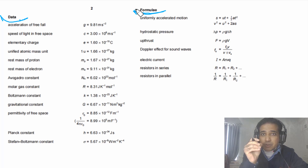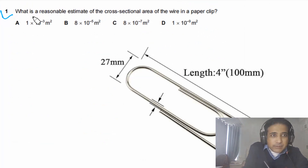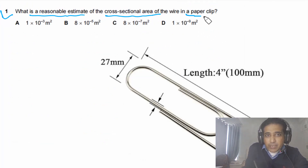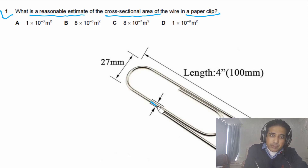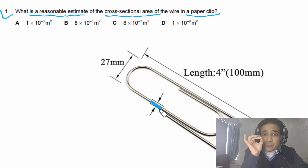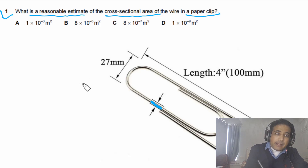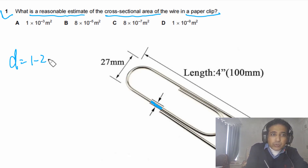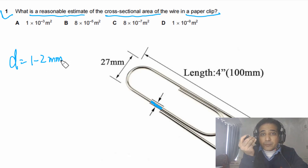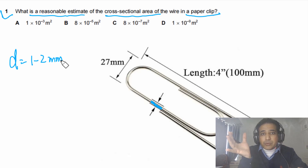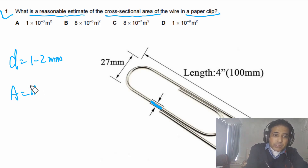Question one asks: what is a reasonable estimate of the cross-sectional area of the wire in a paper clip? First, look at the paper clip and estimate its diameter — the thickness of the wire. If you have a sense of scale, having looked at a metre rule carefully, you can say the diameter is about one to two millimetres. This question is simply about sense of scale — you need to understand how big a millimetre, centimetre, and metre are.